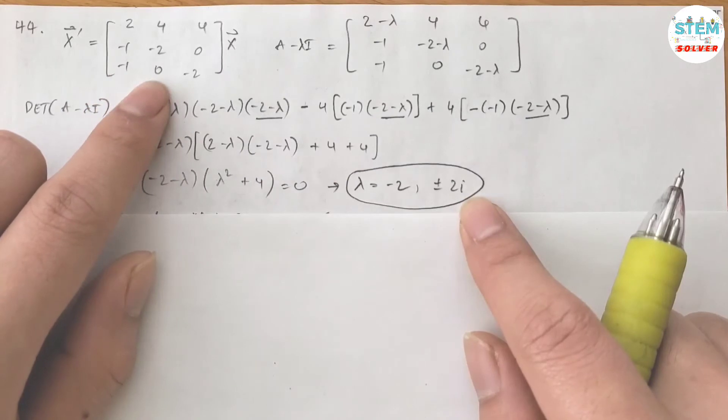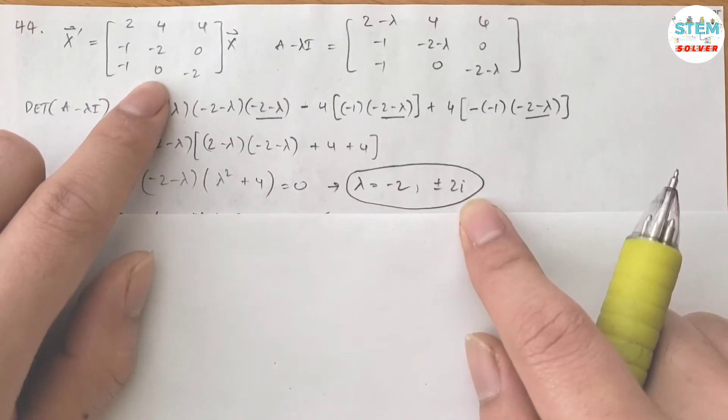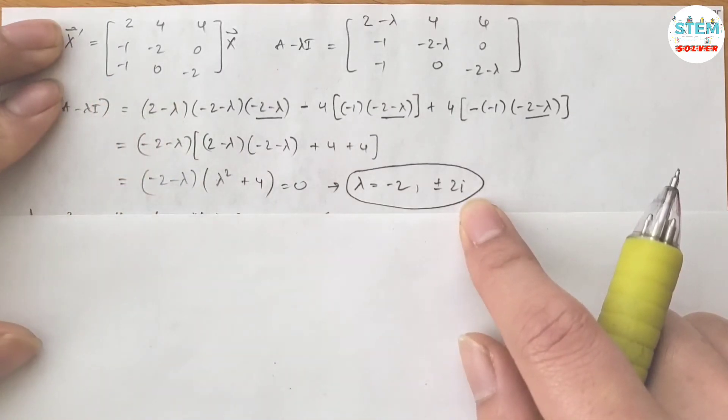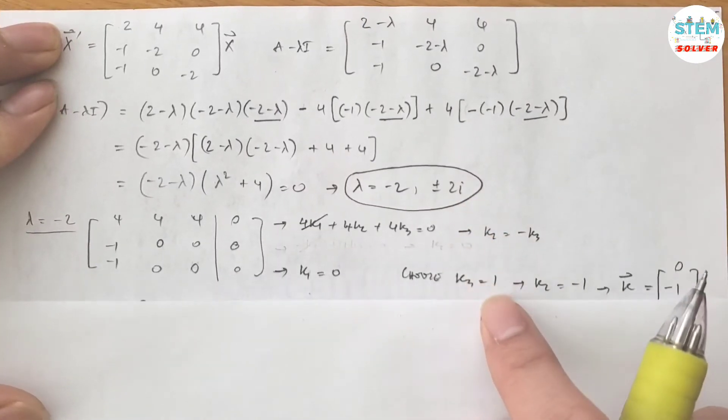So since you have a 3 by 3 matrix, you should have 3 eigenvalues and 3 eigenvectors corresponding to those eigenvalues. Now let's take a look at the first case.